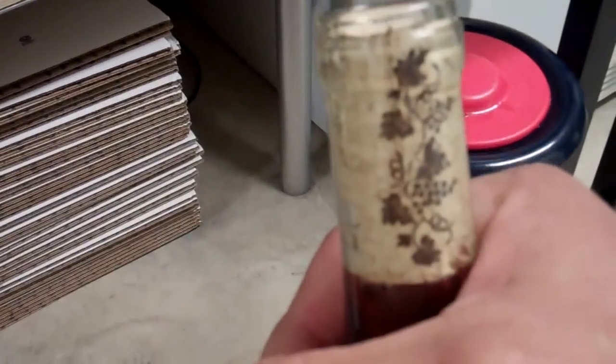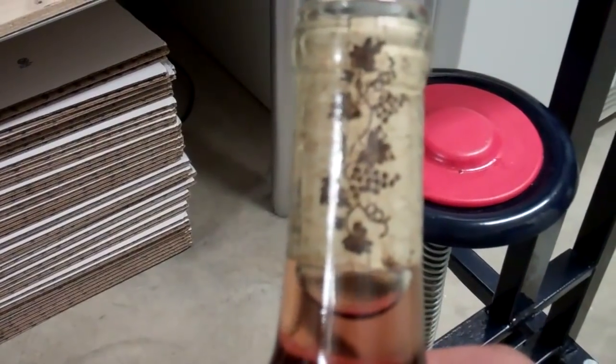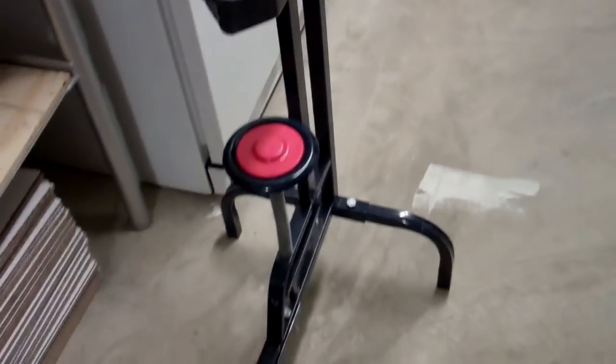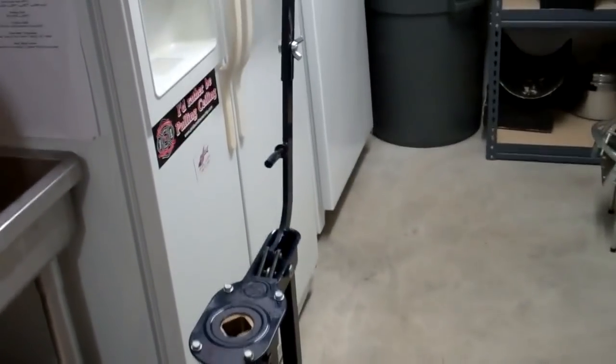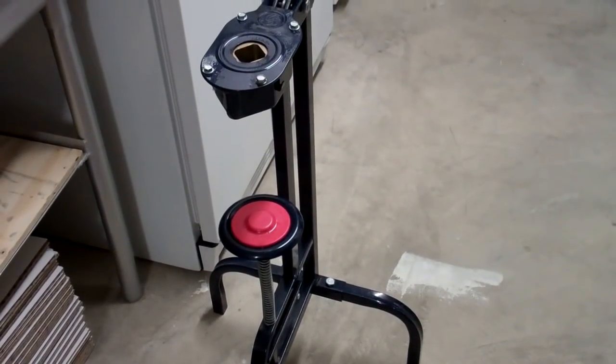So there we go. A perfectly corked bottle. This was, I feel, one of the better investments I made for my home winery. The Italian floor corker.